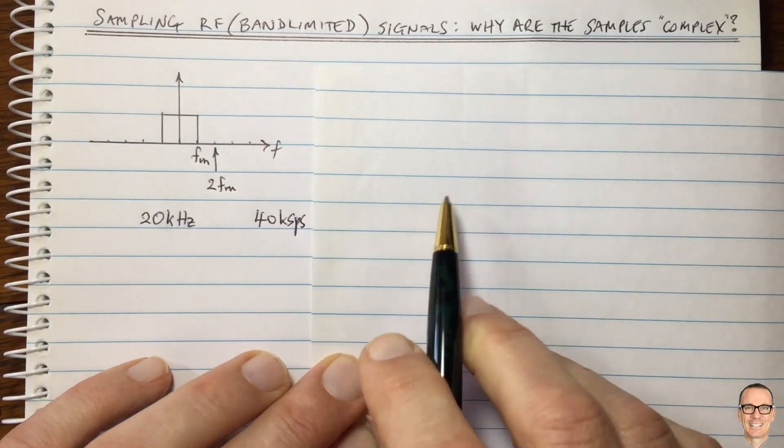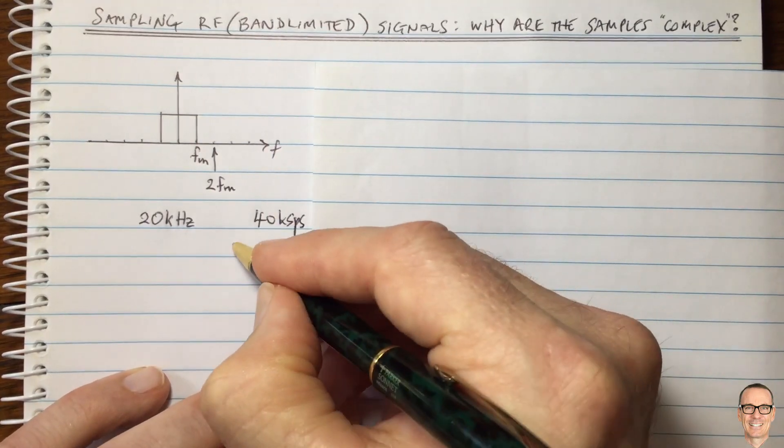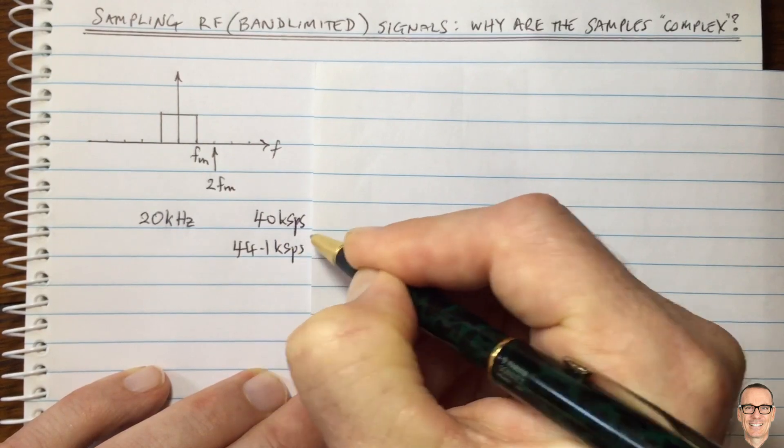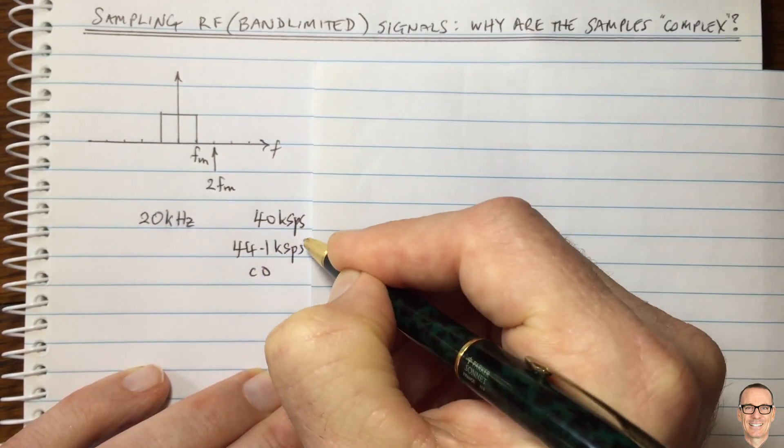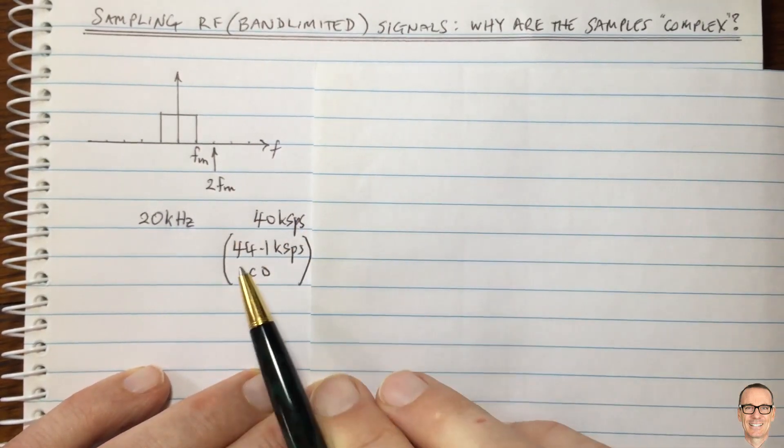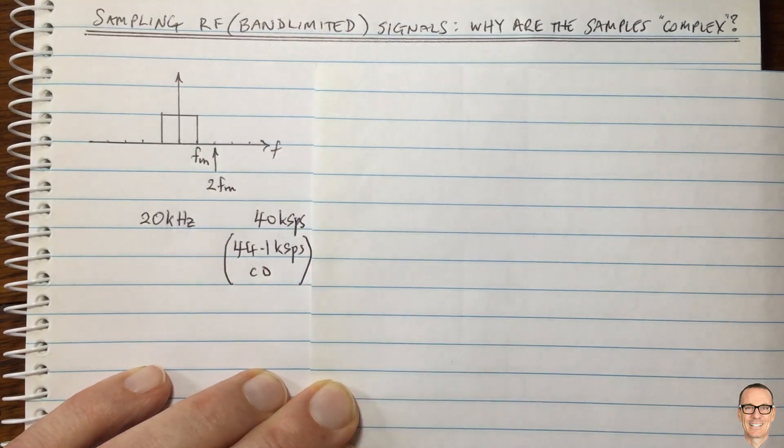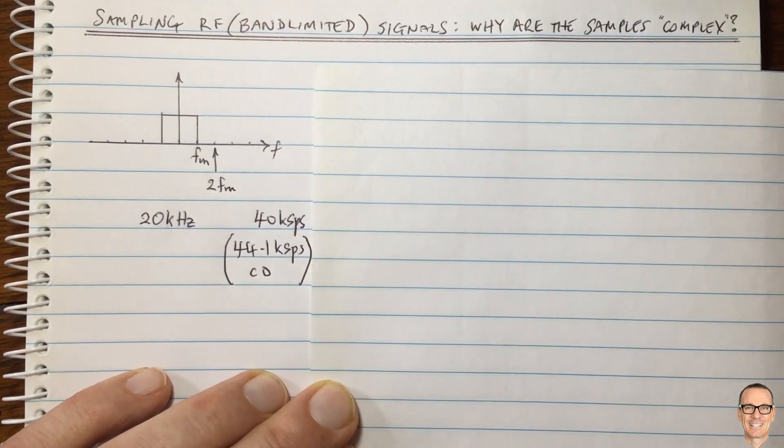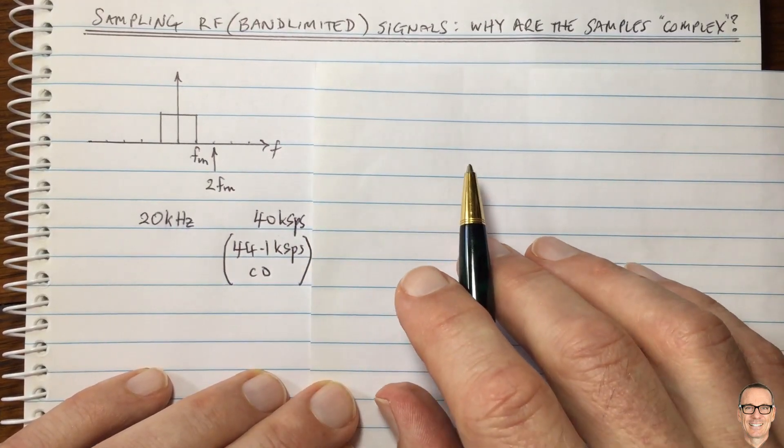And actually in a CD, it is 44.1 kilo samples per second, for example. So there's a bit of leeway there, extra beyond the 40 for CD sampling quality. But let's use these as examples here, where we're taking 40 kilo samples per second, just for an example.